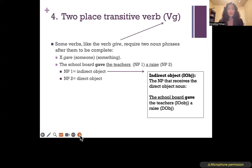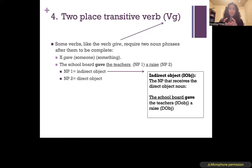Some verbs, like the verb give, require two noun phrases after them to be complete. This is what we call a VG verb. Notice that the G is lowercase and not capital like we saw with VI and VL, because we're not talking about a specific subtype of verb like linking verbs or intransitive verbs. Rather, we're saying this verb patterns like the specific word give, so we use a lowercase g on our tree diagrams.